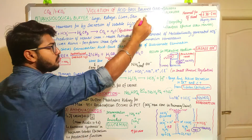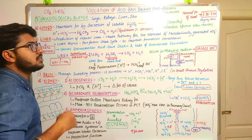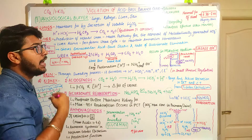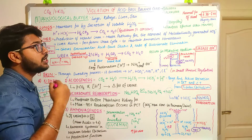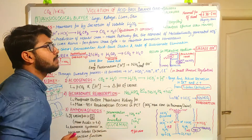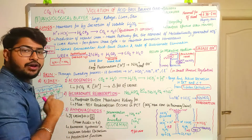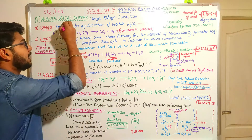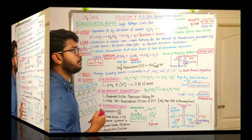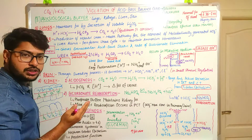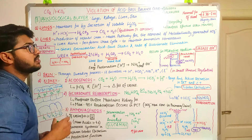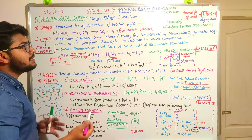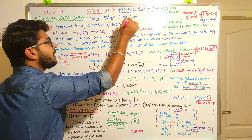We are going to talk about acidosis and alkalosis after some videos, because now we are going to focus on the normal functioning process of our body — how physiologically our body is able to maintain the acid-base balance. We have already completed the chemical buffer system, and now we are going to talk about the physiological buffer system.